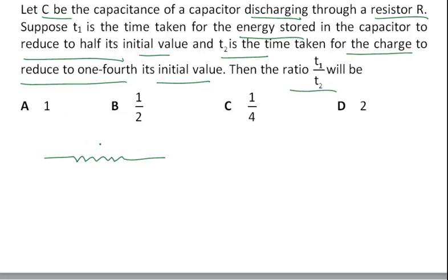So you have a resistor which is connected across a capacitor. So this is capacitor. Initially at T equal to 0, the charge stored on the plate of the capacitor is Q0. And as time progresses, this charge gets discharged through the resistor.